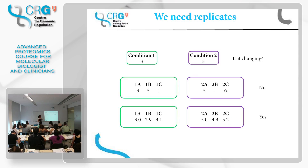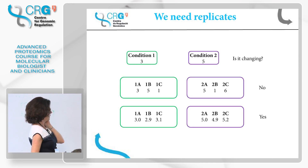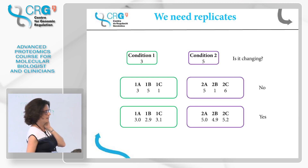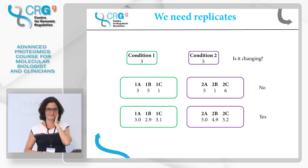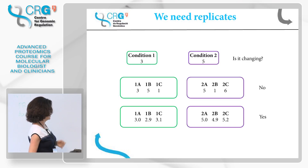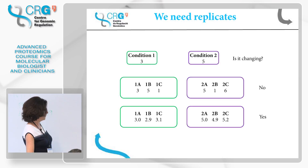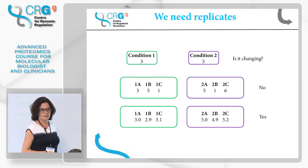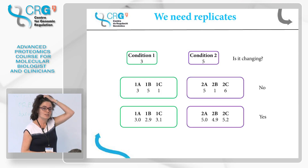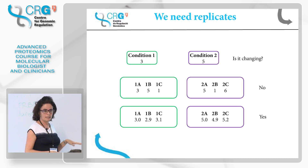Another consideration: we need replicates. Imagine you have a control sample with a value of three and a test sample with a value of five — is it changing? We don't know, because we don't have replicates. There could be a lot of variability in both, meaning no real change, or the values could be very reproducible, confirming a real change. That is why we need replicates. When we work with real examples, we apply statistical tests to determine if there is a change between groups — and for statistics, we need replicates. Users often come with just two samples, one per state, and want us to determine changes. This is not possible.